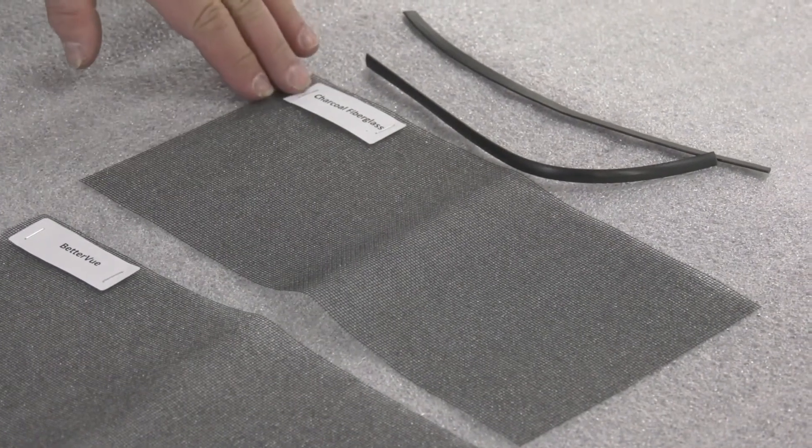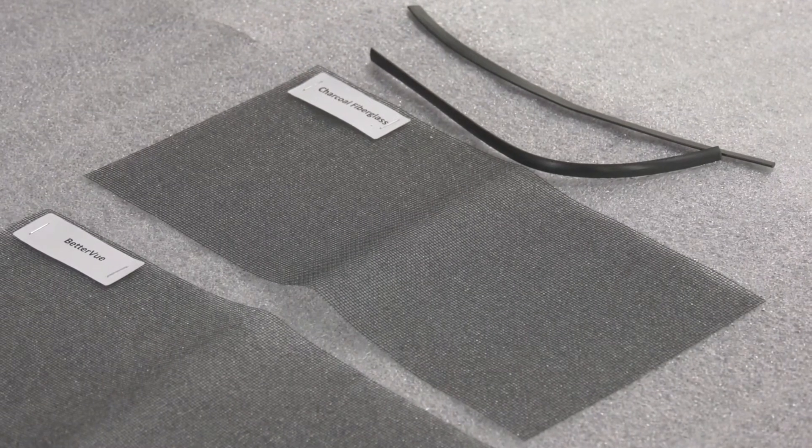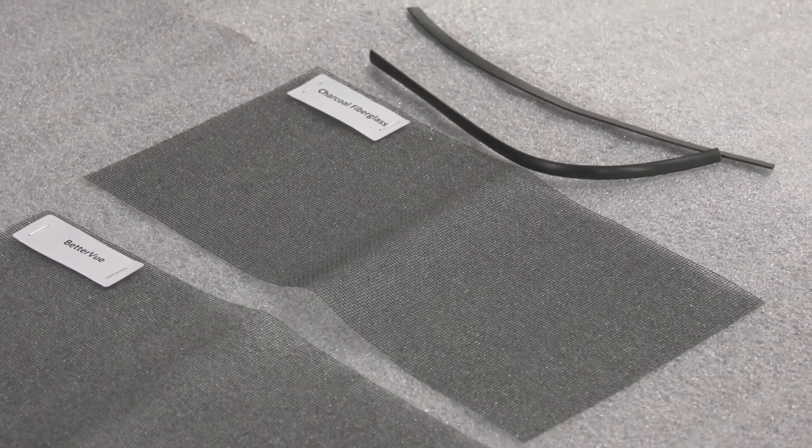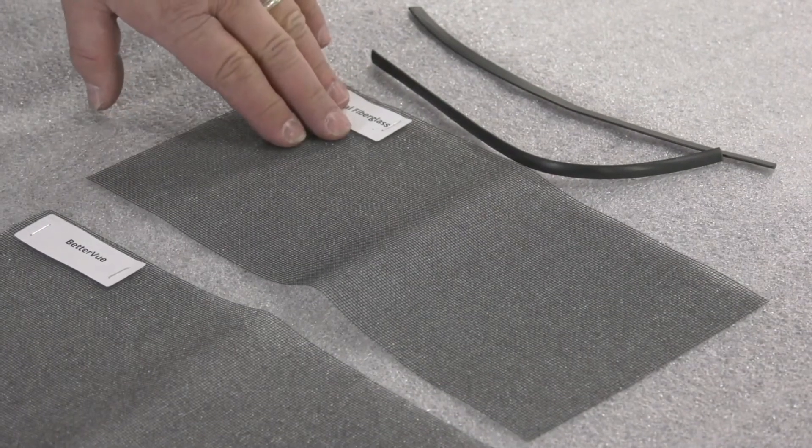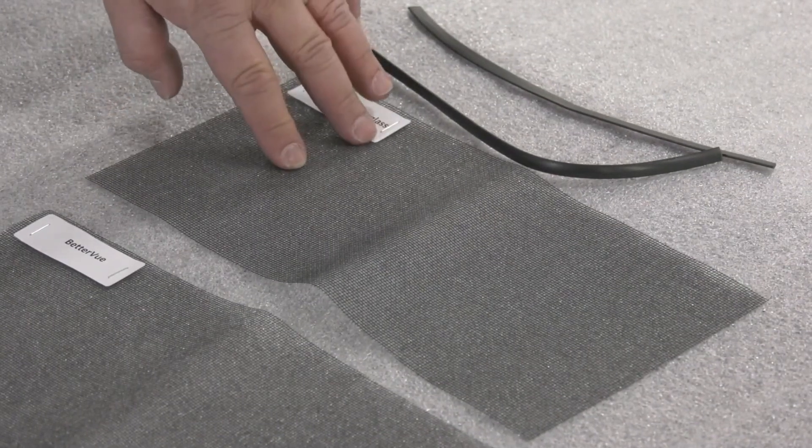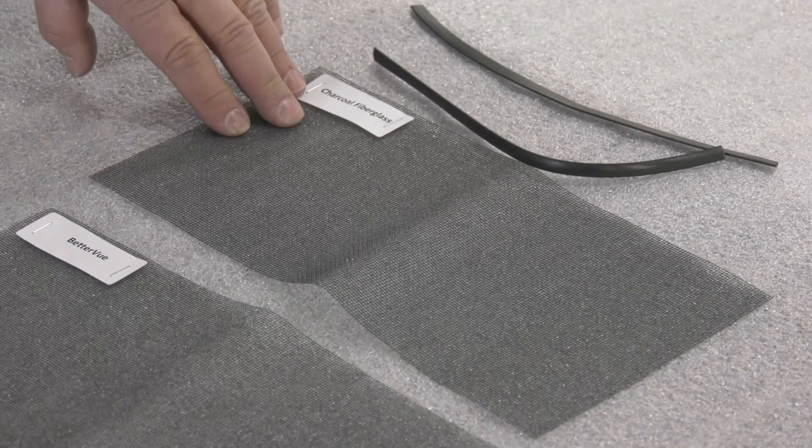Your most popular choice is going to be charcoal fiberglass mesh. It's your least expensive product. It provides good insect and ventilation protection. It's a 0.011 diameter wire, 18 by 16 mesh, and available in rolls from 18 inches wide to 96 inches wide.